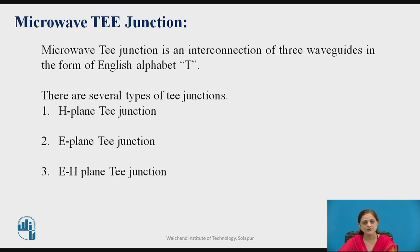First we will see what is the microwave T-junction. A microwave T-junction is an interconnection of three waveguides in the form of the English alphabet T. Therefore, it is known as the microwave T-junction. There are several types of T-junctions: H-plane T-junction, E-plane T-junction, and the combination of E-plane and H-plane T-junction, also known as the E-H-plane T-junction or magic T-junction.